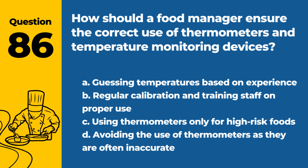Question 86. How should a food manager ensure the correct use of thermometers and temperature monitoring devices? a. Guessing temperatures based on experience. b. Regular calibration and training staff on proper use. c. Using thermometers only for high-risk foods. d. Avoiding the use of thermometers as they are often inaccurate. Answer: b. Regular calibration and training staff on proper use. This ensures accurate temperature measurements for food safety.